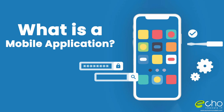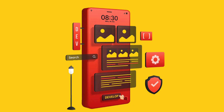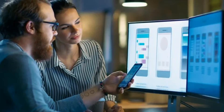Today let's understand what is a mobile application. A mobile application, most commonly referred to as an app, is a type of application software designed to run on a mobile device. Mobile applications frequently offer services that are similar to those found on desktop computers. Apps are little pieces of software that run on their own and have limited functionality.